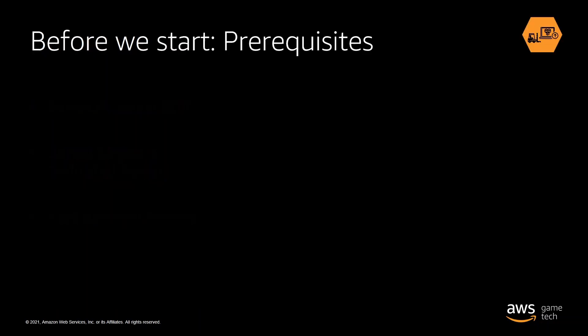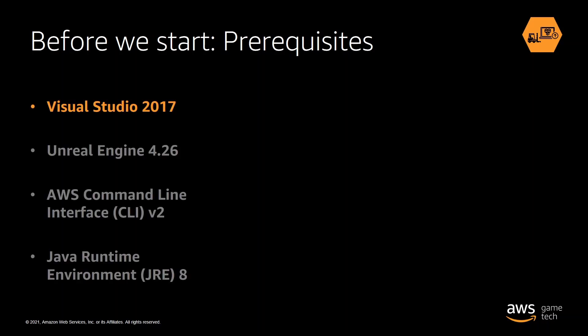This series is primarily intended towards game developers with some existing knowledge of Unreal Engine 4 who are looking to host their game servers on GameLift. Some of the specific prerequisites we're going to be working with are Visual Studio 2017, which we're going to be using to build the Unreal Engine source code version 4.26.